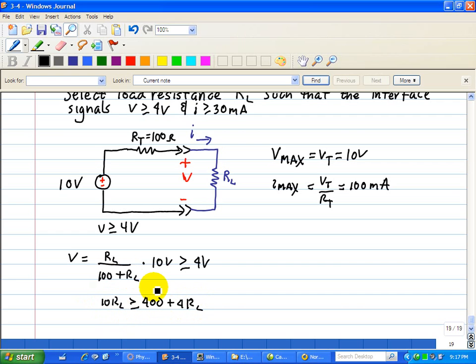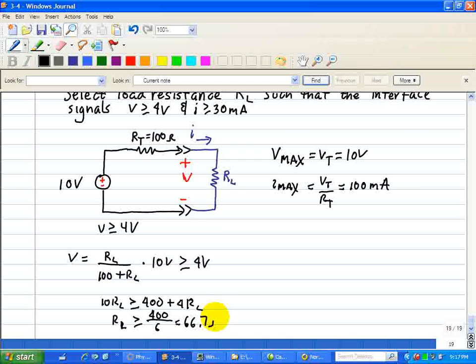This yields, putting this for RL on the other side, RL greater than or equal to 400 divided by 6, which is equal to 66.7 ohms. That's the first constraint.